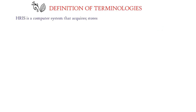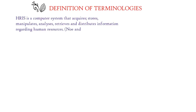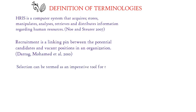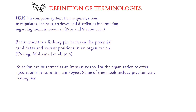Norway and Stura 2007 defined HRIS as a computer system that acquires, stores, manipulates, analyzes, retrieves, and distributes information regarding human resources. Whilst Darag Mohamed et al. 2010 defined recruitment as a linking pin between the potential candidates and vacant positions in an organization. Elcott and LIA 2008 stated that selection is an imperative tool for the organization to offer good results in recruiting employees.